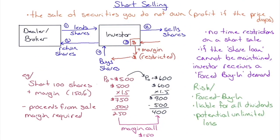Short selling is the sale of securities you do not own, with profit made if the price falls. If you sell something at $100 and buy it back at $50, you've made $50. Just as you can borrow money from your broker to buy stocks (going long), you can borrow shares from your broker to go short. The broker lends you shares from their inventory held in street name.